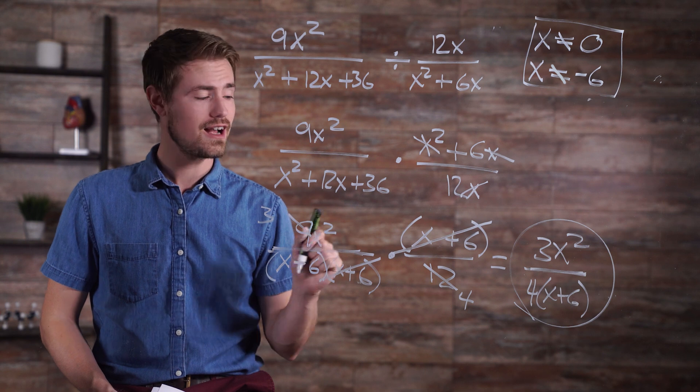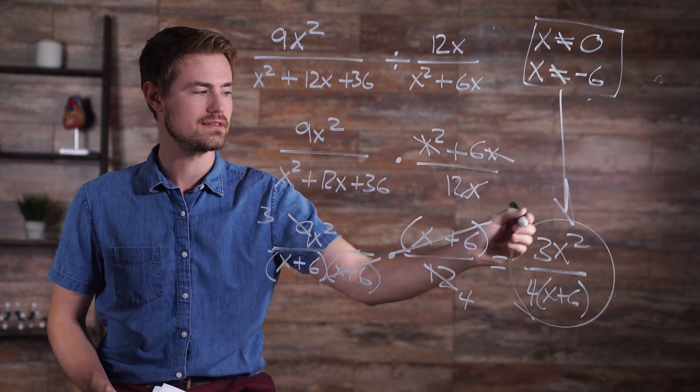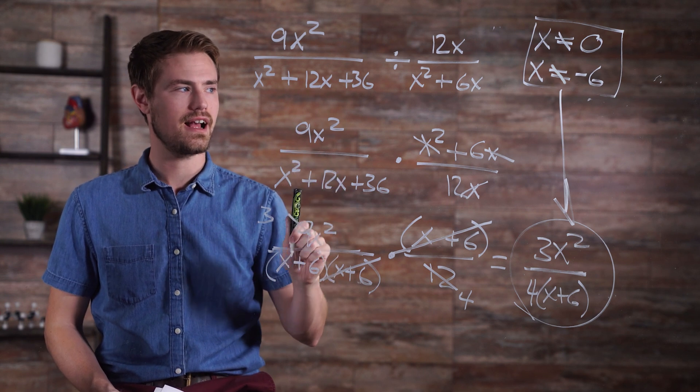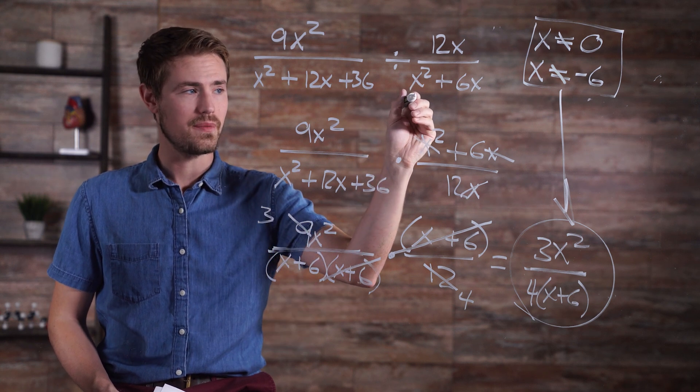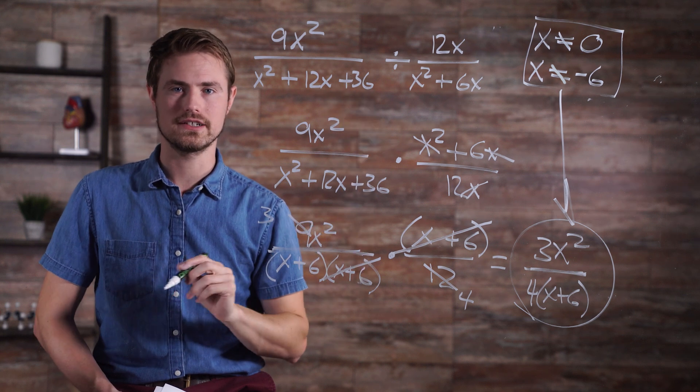But remember, that's not our complete answer if we don't include our restricted domain. We have x cannot equal 0 and x cannot equal negative 6. Remember, we have to make sure that we don't have a 0 in the denominator or the numerator of our second term.